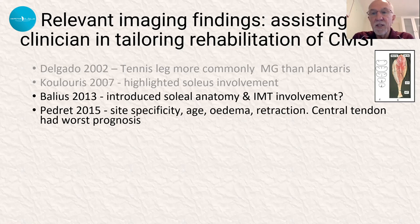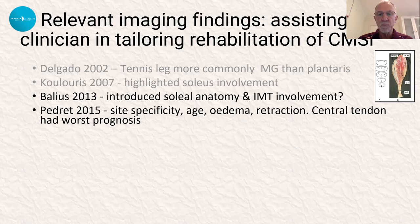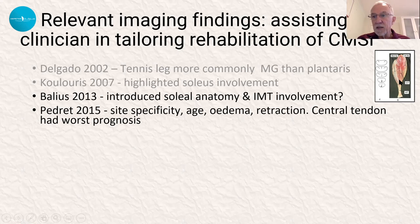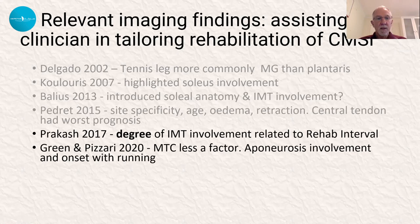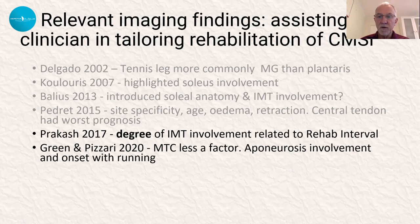Padret and co-authors identified more features of site specificity. Age, intramuscular tendon oedema, and retraction were all features that in a multifactorial approach were probably of most importance to better understanding the prolonged rehabilitation interval associated with a number of these injuries. They found that the central tendon had the worst prognosis.